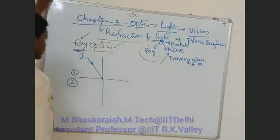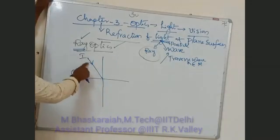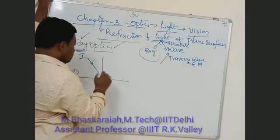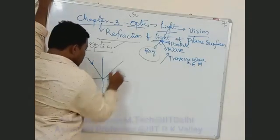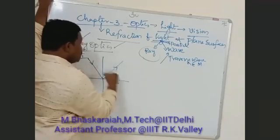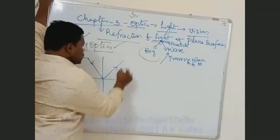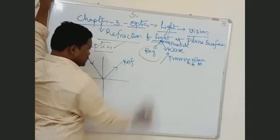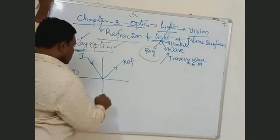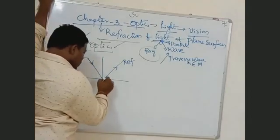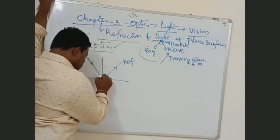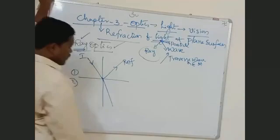Whenever light is incident from one medium to another medium, part of the light comes back into the same medium — we call that reflection. The remaining part of the light goes into the next medium — we call that refraction.